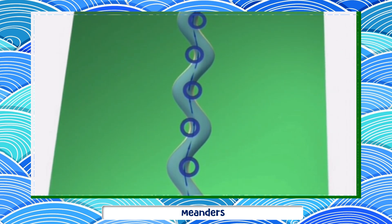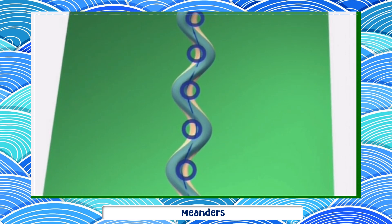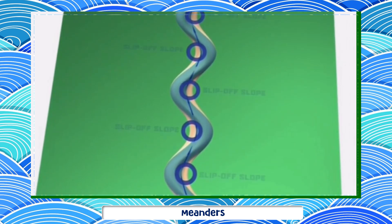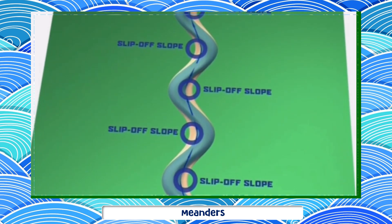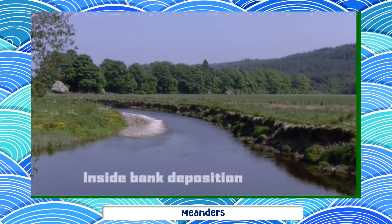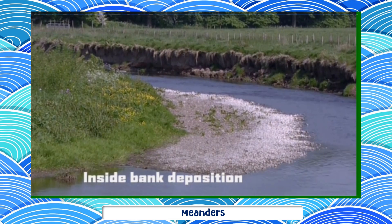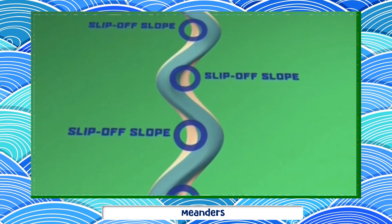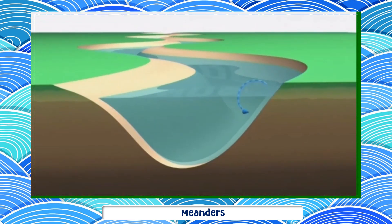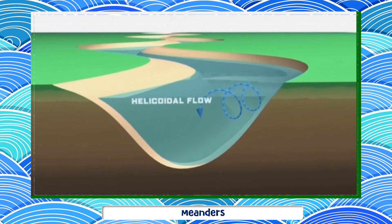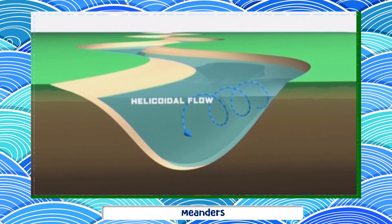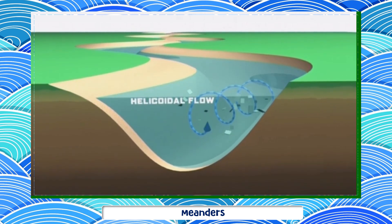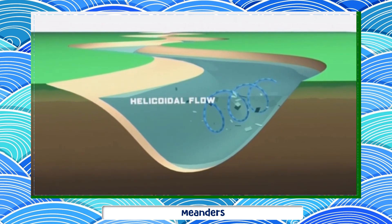The deposits form what's known as a slip-off slope. Water also flows in a horizontal corkscrew motion called helicoidal flow in certain sections of a meandering river. This transports more eroded material from the river cliff of one meander